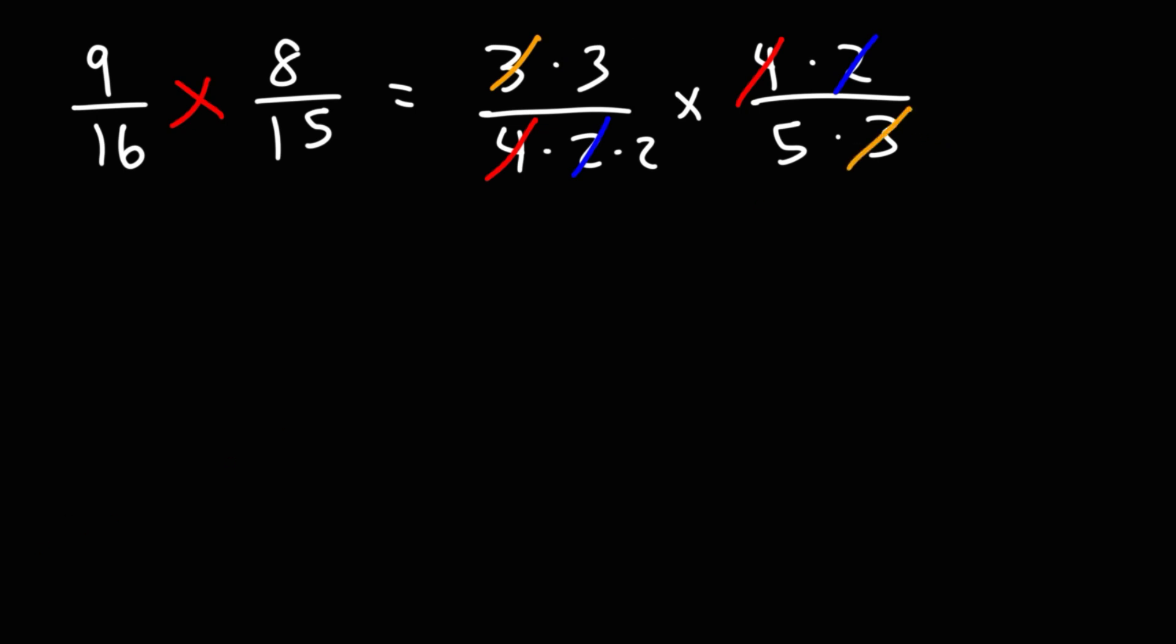Now, let's focus on what we have left over. We have a 3 left over. And on the bottom, we have 2 and 5. So we get a common answer, 3 over 10. So that's how you can multiply fractions using cancellation.